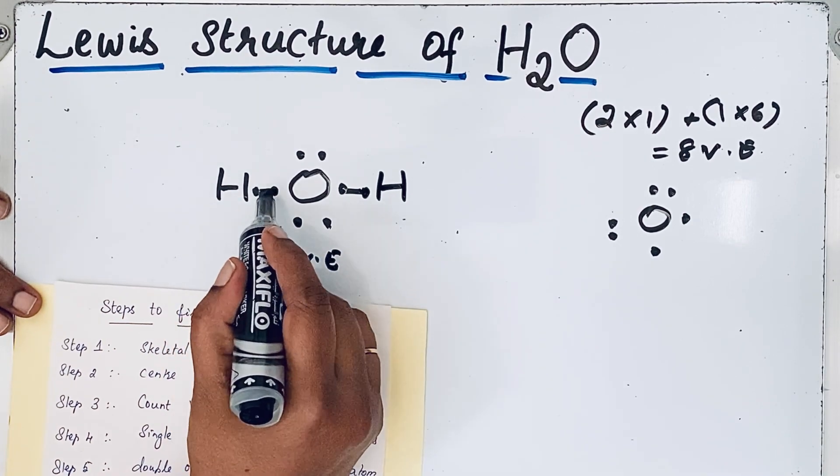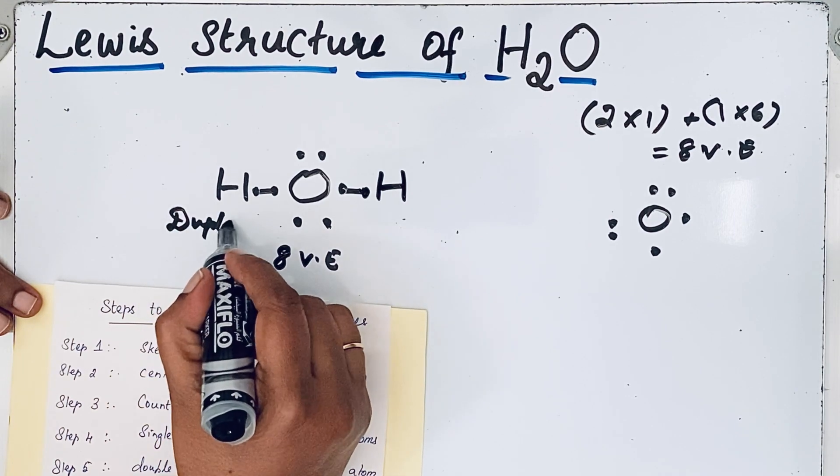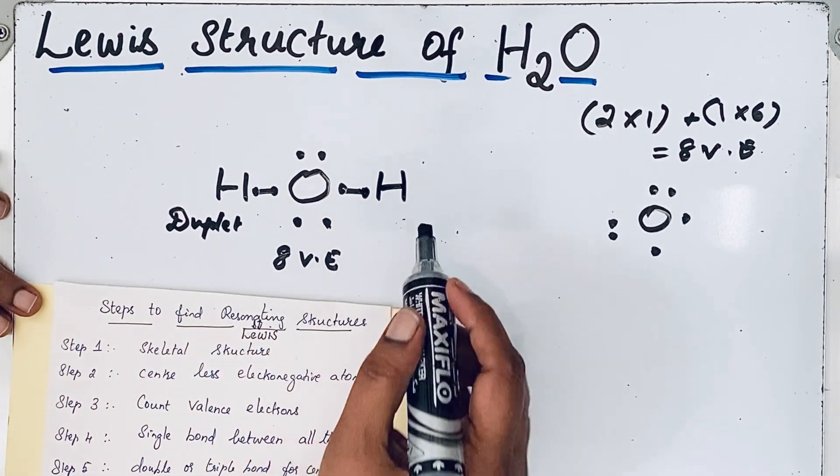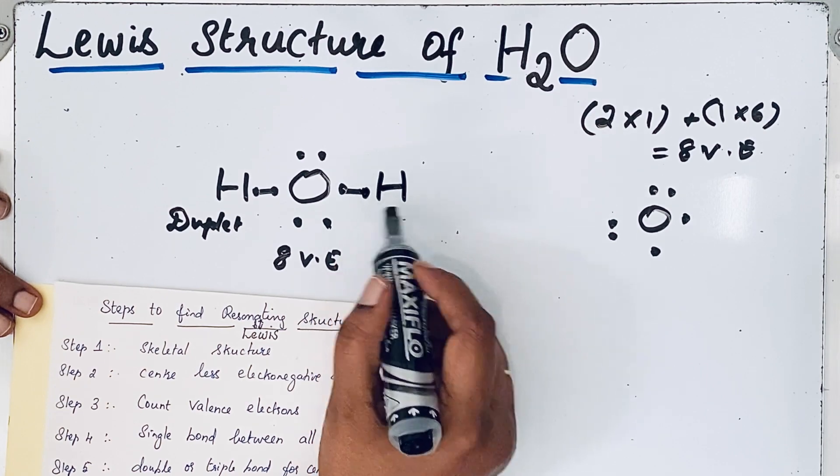Now look at each hydrogen, which has two valence electrons. For hydrogen, the duplet configuration is satisfied. For this hydrogen as well, the duplet configuration is satisfied.